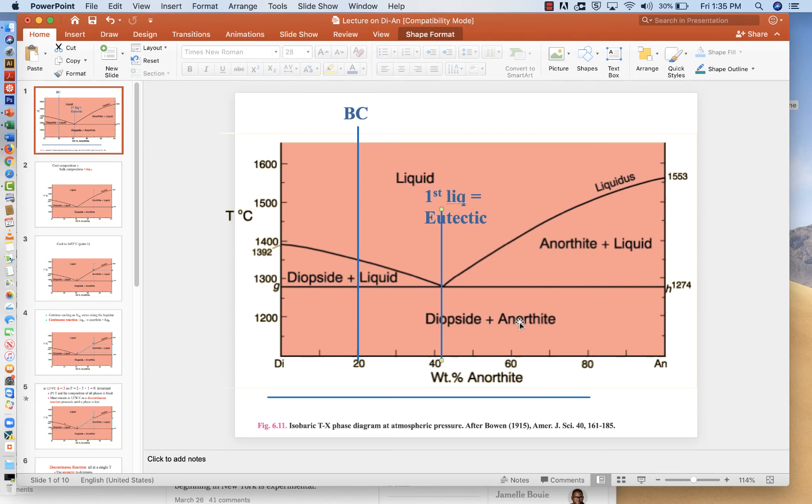Now, which one will melt out first? Well, all we have to do is look at which side of the eutectic that we're on. Eventually, when we're done melting, the liquid should look like the bulk composition.